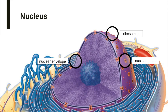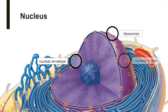The nucleus of the cell is often referred to as the control center of the cell, and contains the cell's genetic material, or DNA. The nucleus also contains small, spherical nucleoli that act as the assembly sites for ribosomes. The nucleus is bound by a double-layered porous membrane called the nuclear envelope, with large nuclear pores that regulate what passes through.